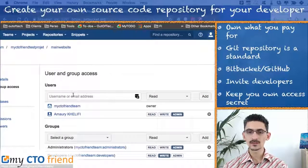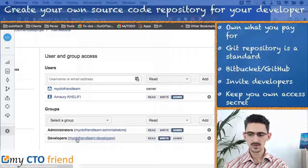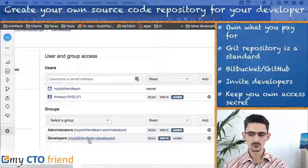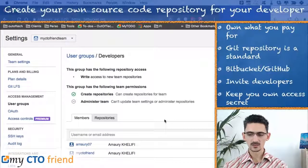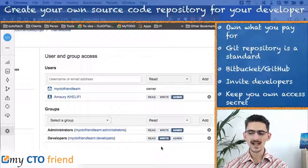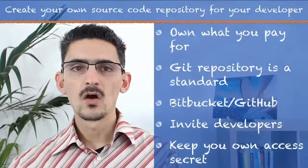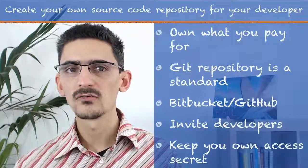Then go to 'User and group access.' You will be able to give access directly to a user — you can add their email here. You can also manage by groups. For example, if I want to manage a 'developers' group, I can add a new member to this group. You can also create a 'test' group which will have only read access — it works exactly the same way.